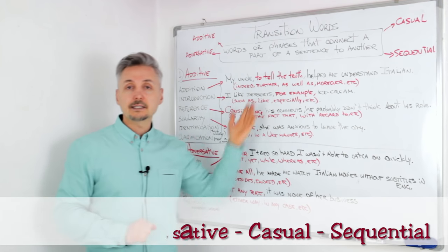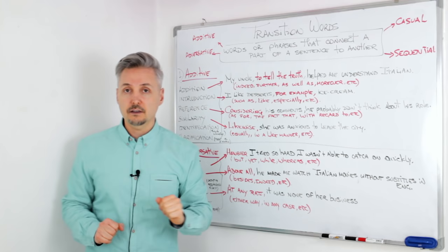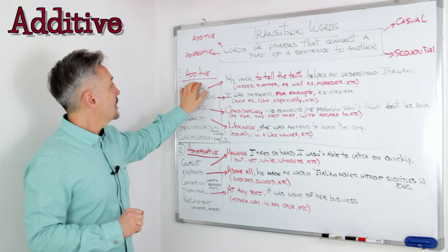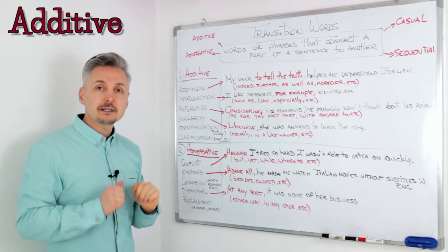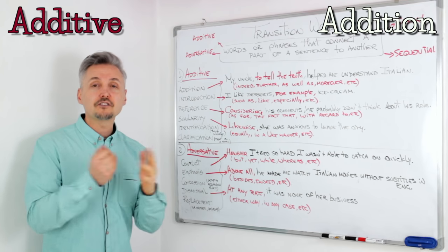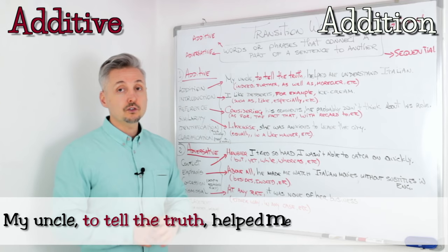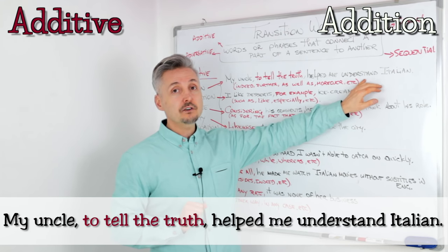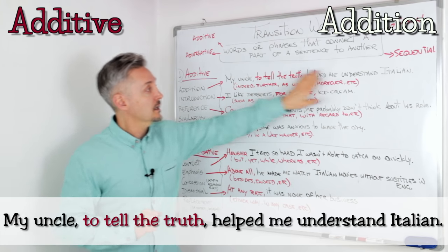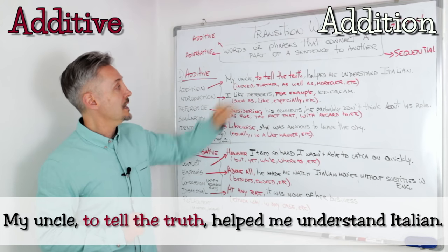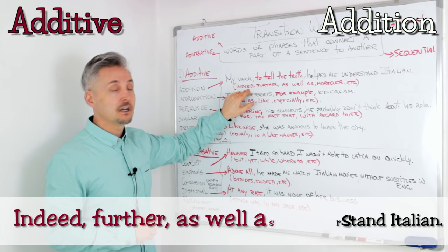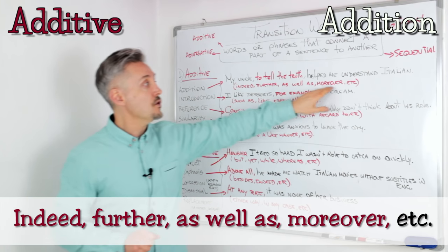Here I listed examples of additive and adversative. Let's take a look at the first examples. The additive can be divided into six subgroups. The first one is addition. My uncle, to tell the truth, helped me understand Italian. So 'to tell the truth' is inserted in the sentence, and we can replace it with other addition transition words like 'indeed,' 'further,' 'as well as,' 'moreover.'